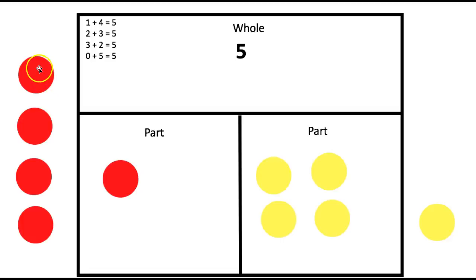Okay, let's see what else we can do. We can take two red counters. I'll move that one out of there. And three yellow counters, and let's add them all together. One, two, three, four, five. So, we have two plus three equals five.